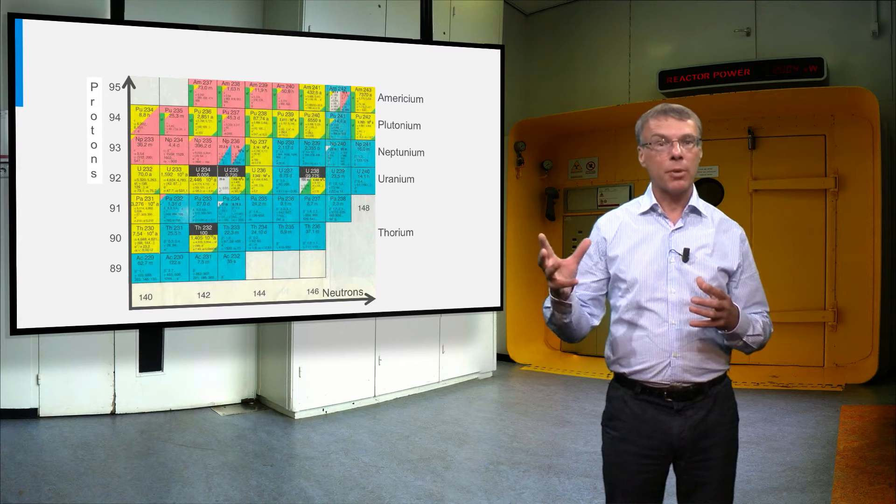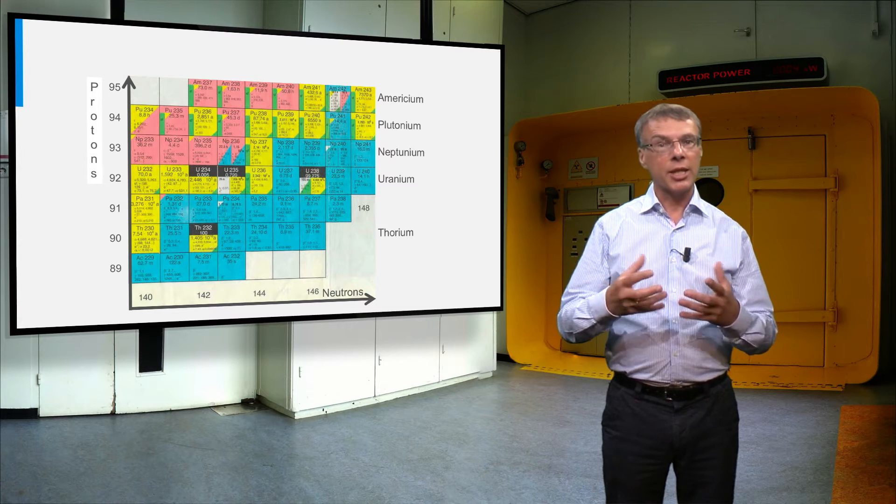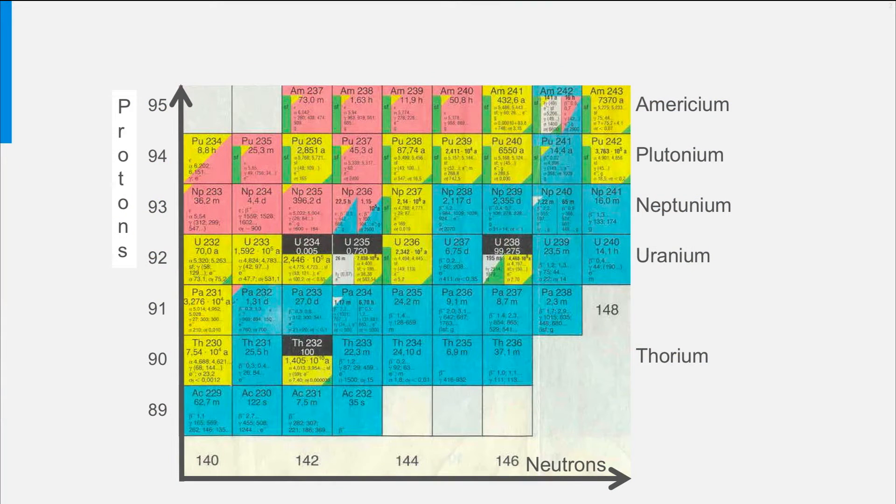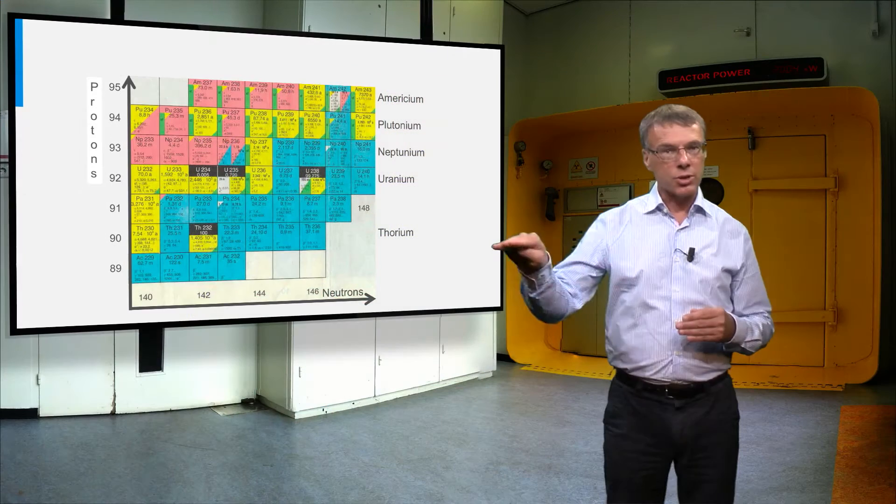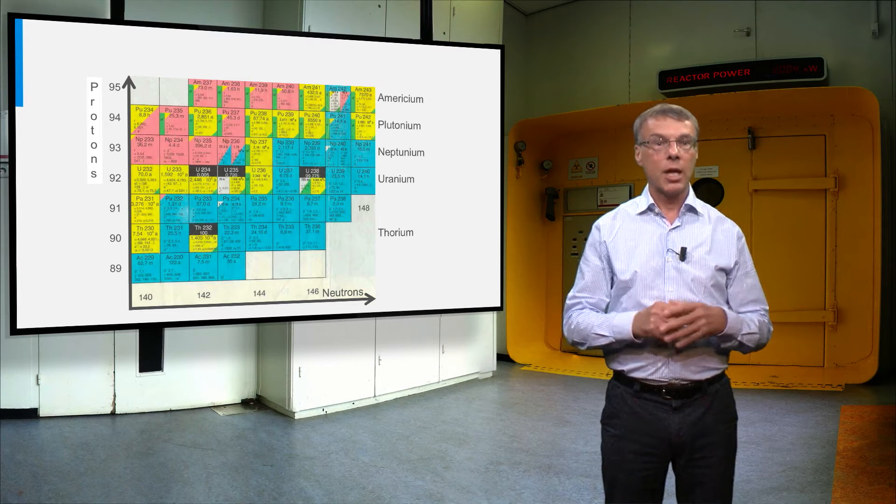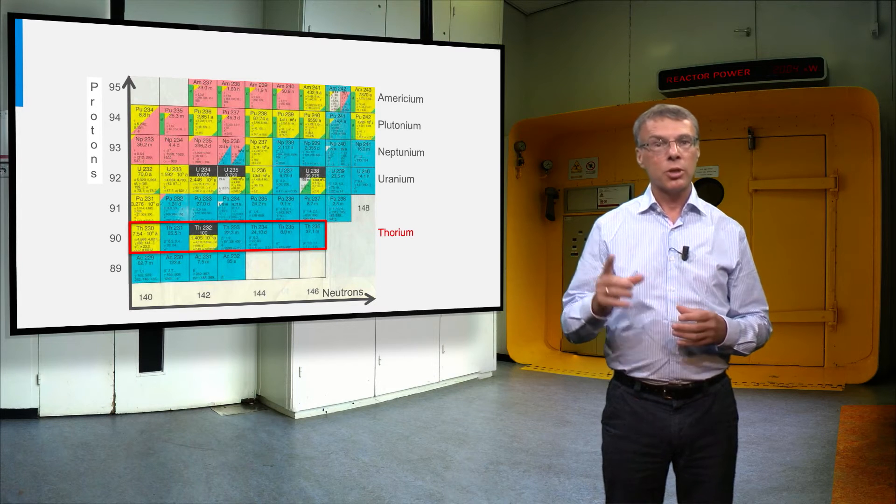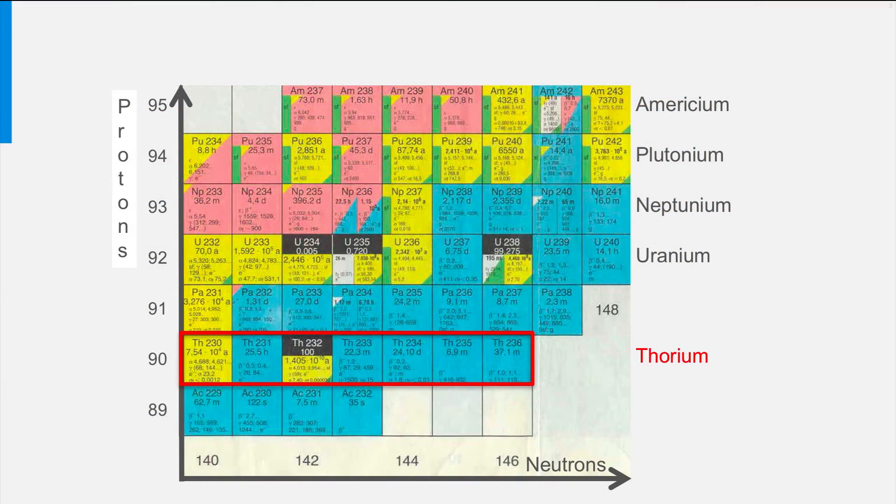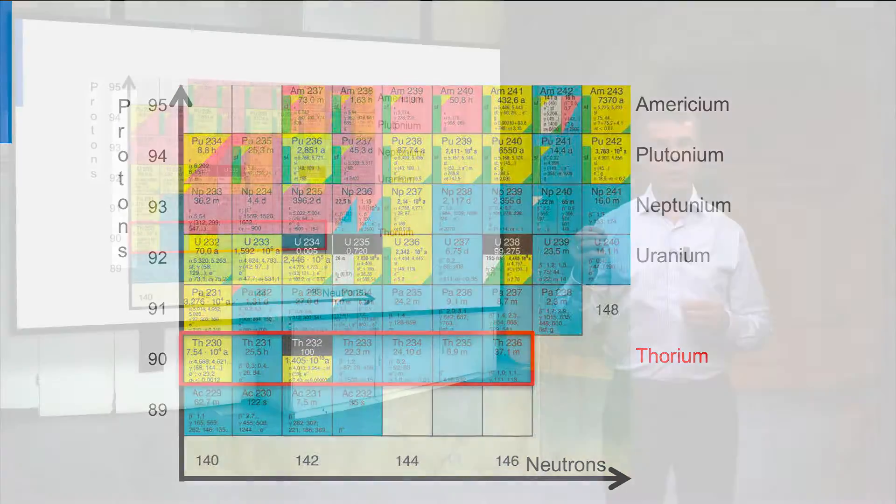Let's first look at a part of the nuclide chart containing the actinides. Along the vertical axis I've plotted the number of protons in the nucleus, and along the horizontal axis the number of neutrons. Each row shows the isotopes of one particular element. The red box, for example, shows the isotopes of the element thorium, and the black or partly black squares indicate the isotopes that can be found in nature.